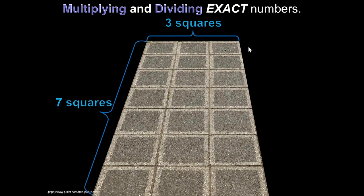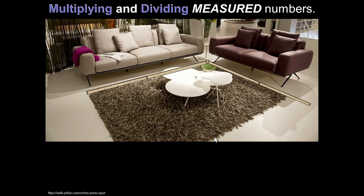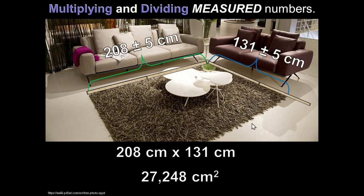Now let's look at multiplying and dividing. If we had exactly three squares by exactly seven squares, we get exactly 21 altogether. But if we measure a carpet with fibers and strings hanging off, it's hard to say the actual length. Maybe it's 208 ± 5 centimeters on one dimension and 131 ± 5 centimeters on the other. If we just multiply 208 by 131 and write down the calculator's answer, we're probably being dishonest.